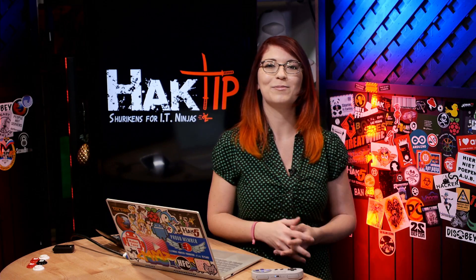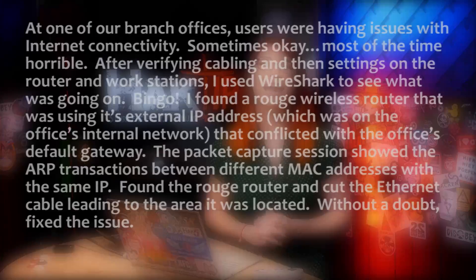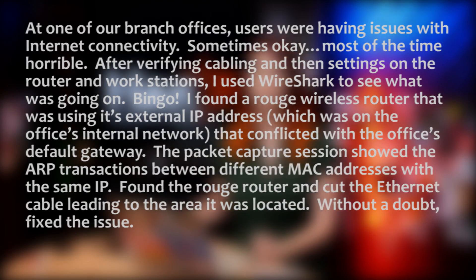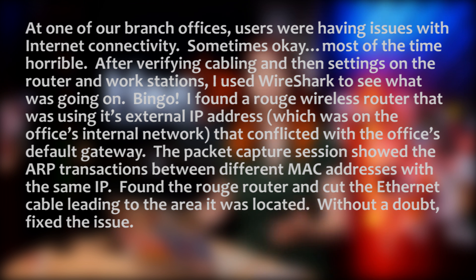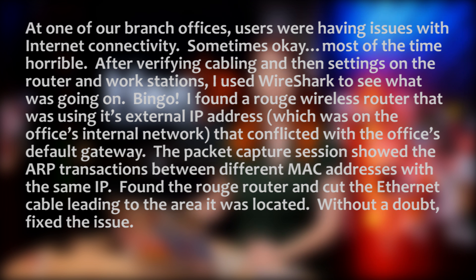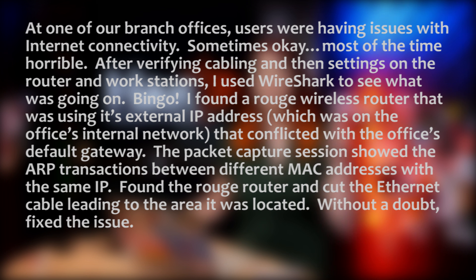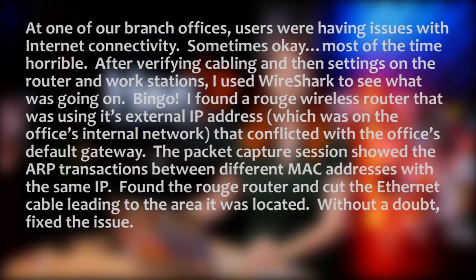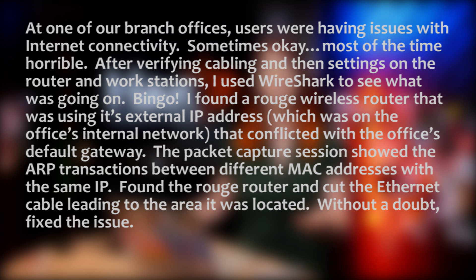Our next email comes from Michael who writes: at one of our branch offices, users were having issues with internet connectivity — sometimes okay, most of the time horrible. After verifying cabling and settings on the router and workstations, I used Wireshark to see what was going on. Bingo! I found a rogue wireless router that was using its external IP address, which was on the office's internal network and conflicted with the office's default gateway.